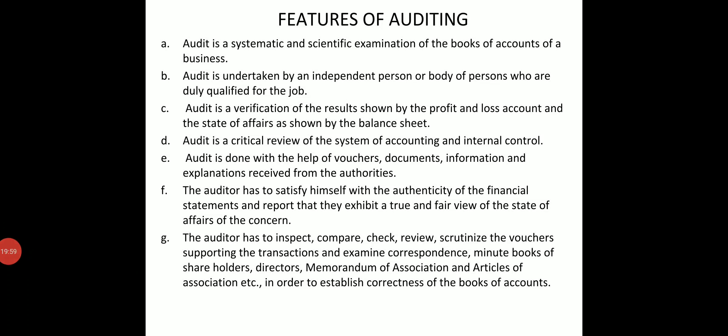The sixth feature: the auditor has to satisfy himself with the authenticity of the financial statement and report that they exhibit a true and fair view of the state of affairs of the concern. The auditor must check the authenticity of the financial statements — that all books of accounts and financial statements represent a true and fair view, meaning there are no errors, no fraud, and the books are prepared as per accounting principles and accounting standards norms.